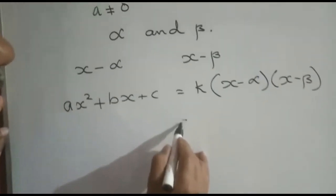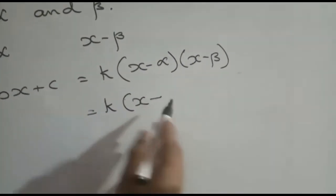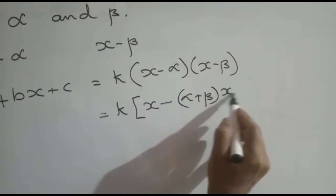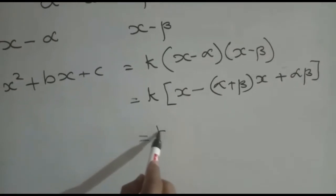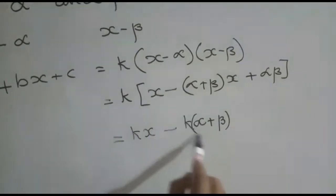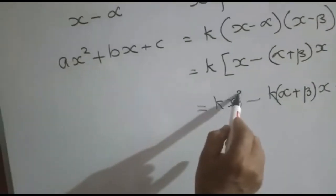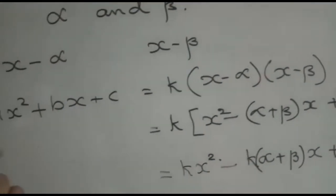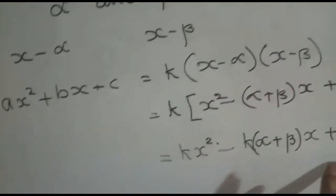Now expanding this by the formula for (x minus a)(x minus b), this can be written as x squared minus (alpha plus beta) into x plus alpha beta. Opening the bracket: kx squared minus k into (alpha plus beta) into x plus k alpha beta. So the quadratic polynomial ax squared plus bx plus c is equal to kx squared minus k(alpha plus beta)x plus k alpha beta.